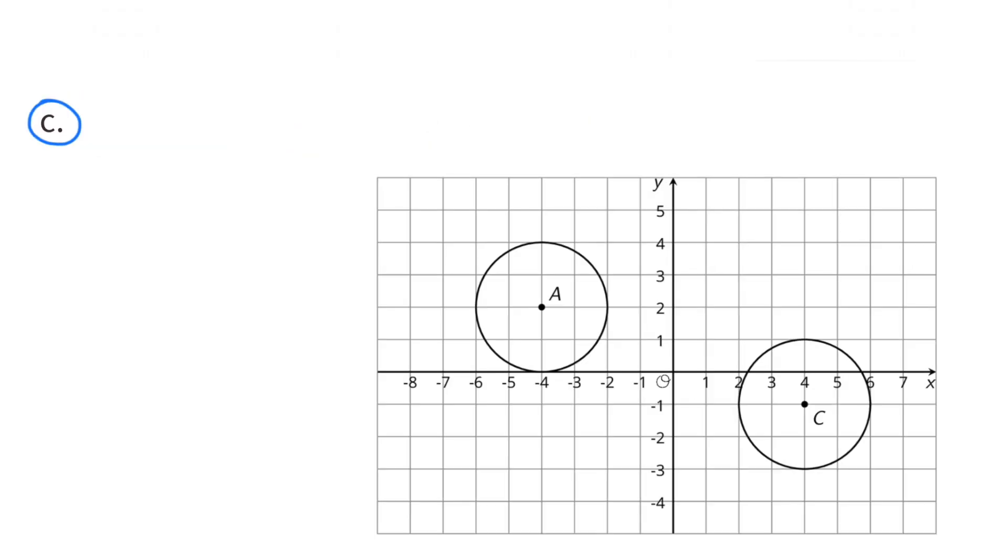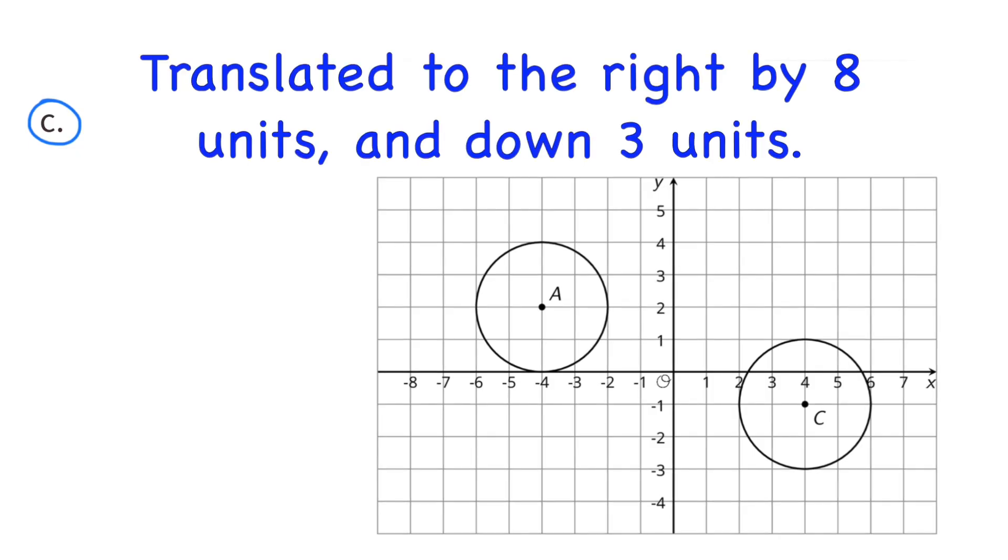C. These two shapes are congruent. The first shape was translated to the right by 8 units and then moved down 3 units.